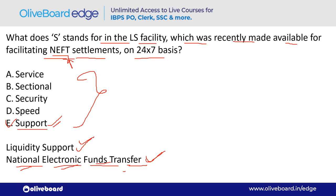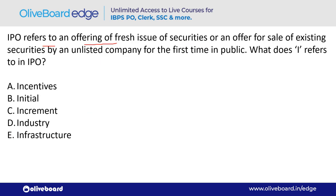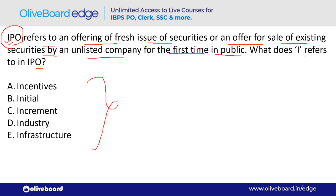IPO refers to an offering of a fresh issue of securities or an offer for sale of existing securities by an unlisted company for the first time to the public. What does 'I' represent in IPO? I stands for Initial — option B. IPO is Initial Public Offering.